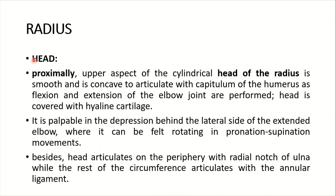Talking in detail about the head: the upper aspect of the cylindrical head of the radius is smooth and concave to articulate with the capitulum of the humerus, as flexion and extension of the elbow joint are performed. The head is covered with hyaline cartilage.